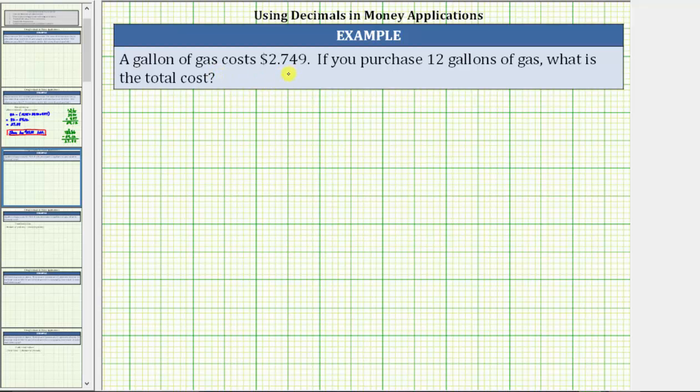A gallon of gas costs 2.749 dollars. If you purchase 12 gallons of gas, what is the total cost?